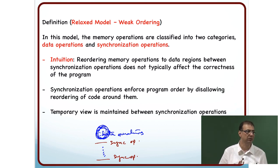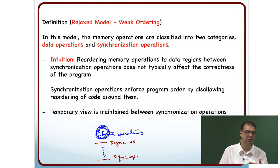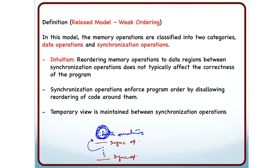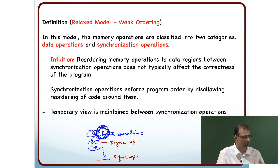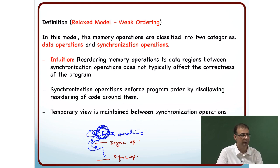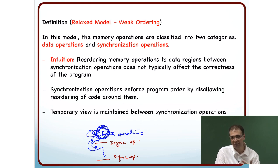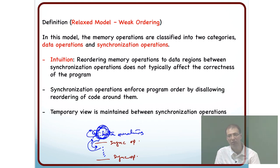That is the agreement between the programmer and the system: within the data operations, reordering is allowed as long as there is no sync operation. Instructions should not be reordered across sync operations — they should not cross the sync boundary. Between sync boundaries, reordering is allowed, and values can be kept in registers. When a sync operation is hit, all register values must be written back to memory, and any pending write buffer updates must complete. At the point of the sync operation, the processor state must be consistent with memory.